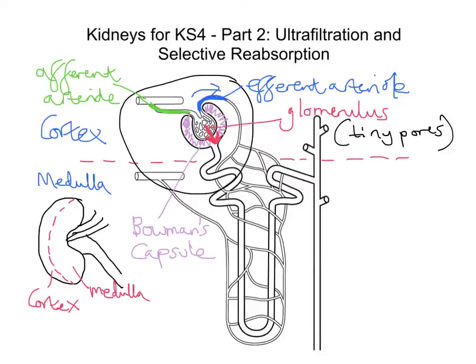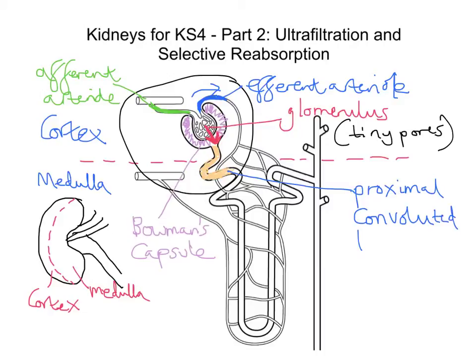Now, what's important is what happens in this part that I'm highlighting in yellow. Through this series of videos I'll be labelling all of this diagram, but in this video I'm only labelling the parts I'm concerned with. This part highlighted in yellow is called the proximal convoluted tubule — 'proximal' meaning nearest — and it is here where you get what's called selective reabsorption.